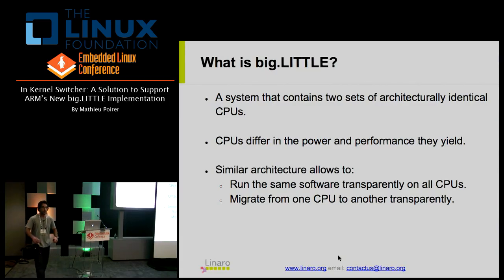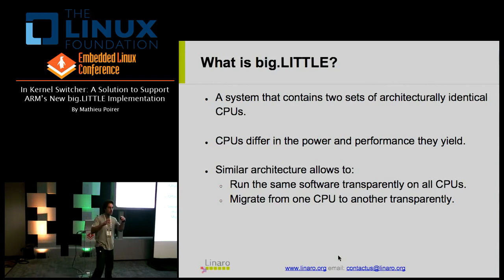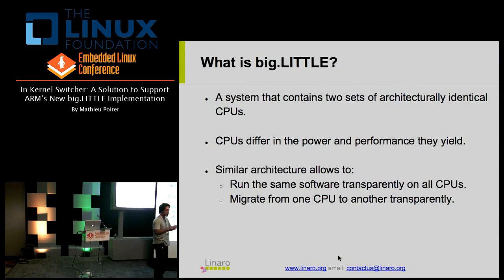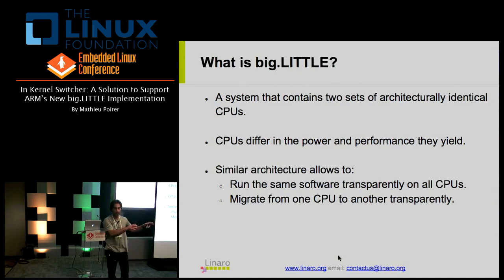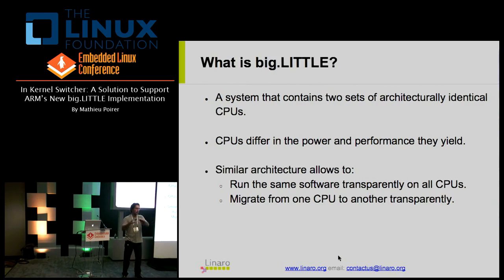Big.LITTLE is an architecture that includes different CPUs that are architecturally similar. The CPUs have different capabilities, but their architecture is the same. So the code that runs on one processor can easily run on the other and be migrated seamlessly. The fact that the architectures are similar also means there's a one-to-one mapping between one processor and another, and this is key to the design.